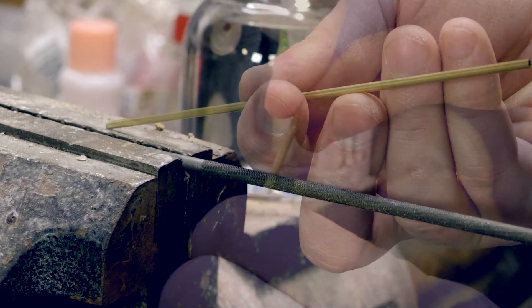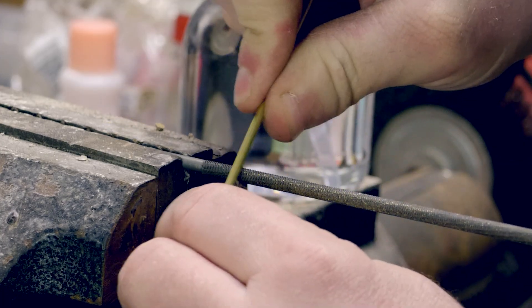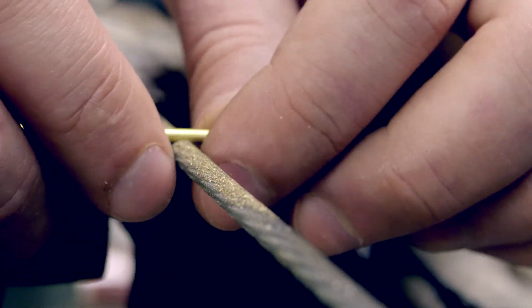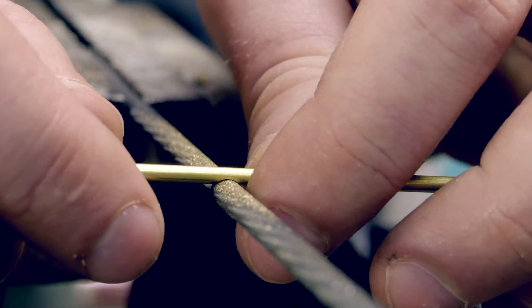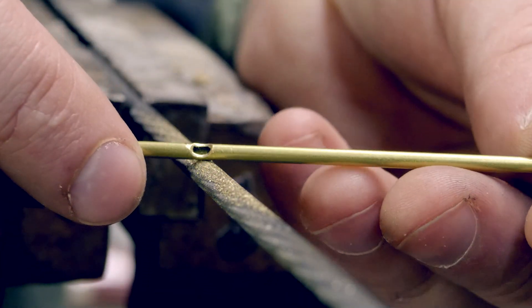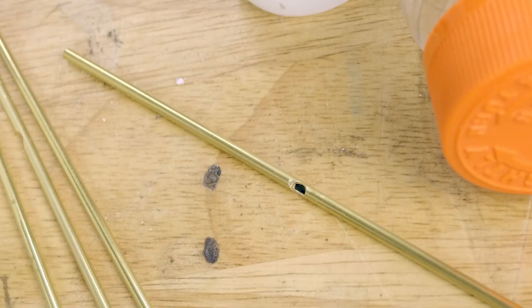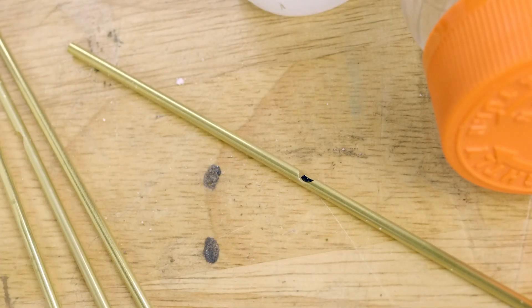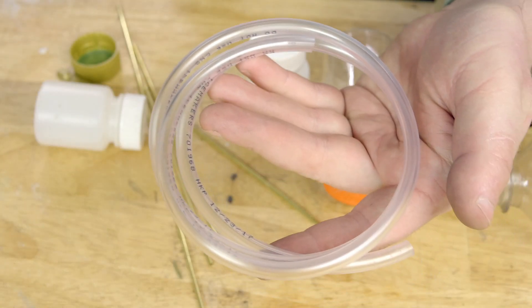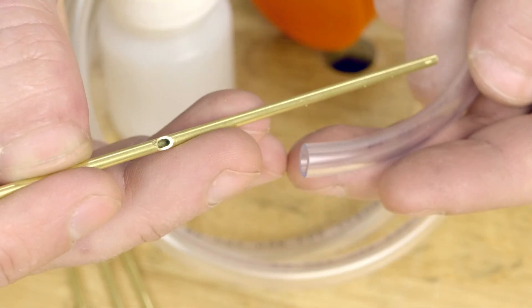The next step is to cut a hole through the side of the brass tube about a third of the way from one end. The file I'm using here is made for sharpening chainsaws. This hole is where the sand will enter the tube. This brass tube is too small to connect directly to an air compressor line, so I'll use a length of vinyl tubing as an intermediary connection.